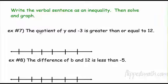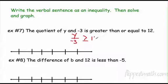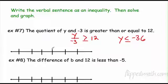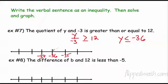Write the verbal sentence as an inequality. The quotient of y and negative 3 — quotient means division — is greater than or equal to 12. Multiply both sides by negative 3; when I multiply by a negative I need to switch. So y is less than or equal to negative 36. Mark negative 36, shade it since it could be equal to, and all numbers less than that go the other way.